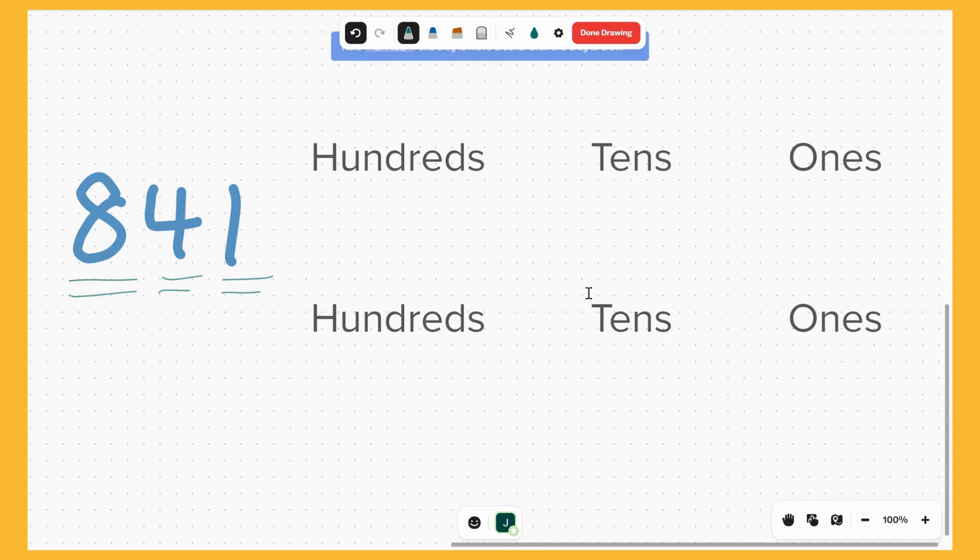So we got one ones and we got four tens, and we've got eight hundreds. In other words, it's 800, four tens which is 40, and one ones which is 1.